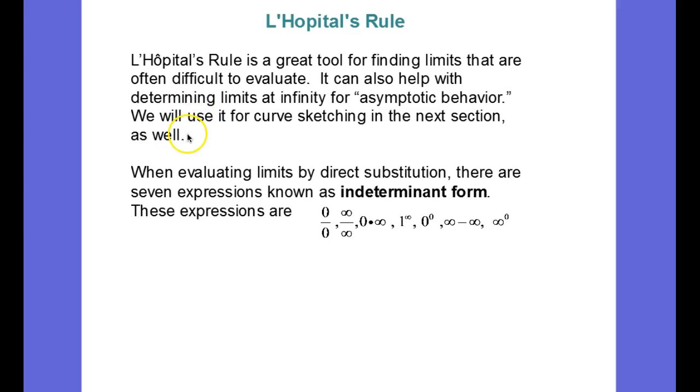So when evaluating limits by direct substitution there are seven expressions known as indeterminate forms and these are 0 over 0, infinity over infinity. These are the two primary ones that we'll be dealing with in terms of L'Hopital's rule.